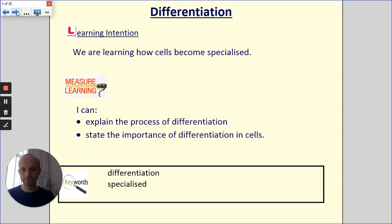So the key points that we want you to take away from this lesson: by the end of this lesson, we want you to be able to explain this process of differentiation, tell us what differentiation is, but also tell us how it happens and how the process actually happens, and state the importance of differentiation.